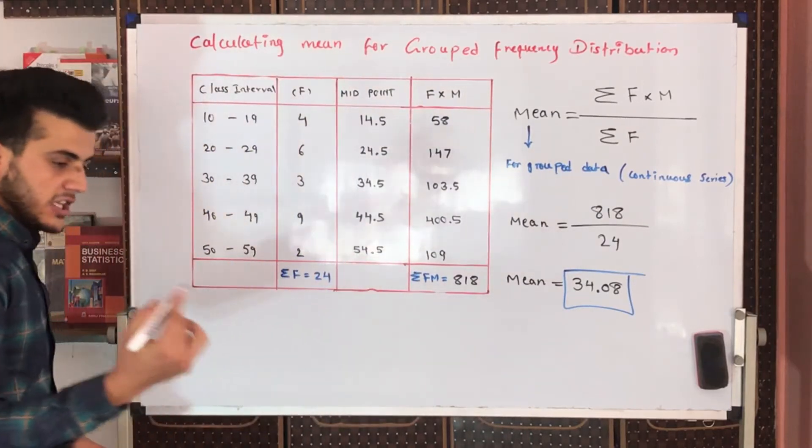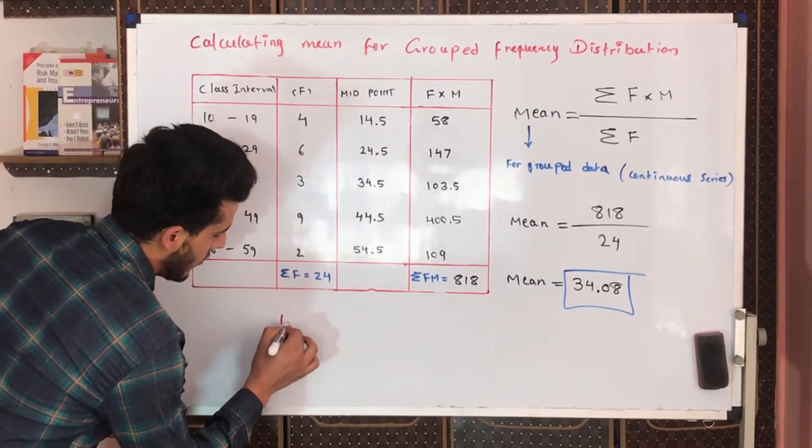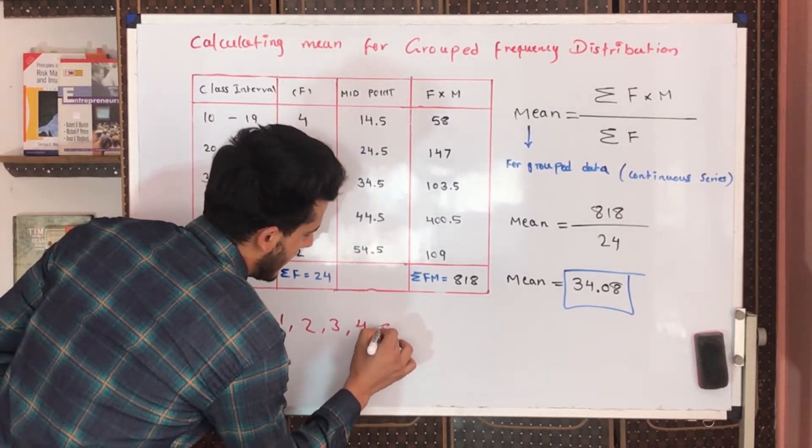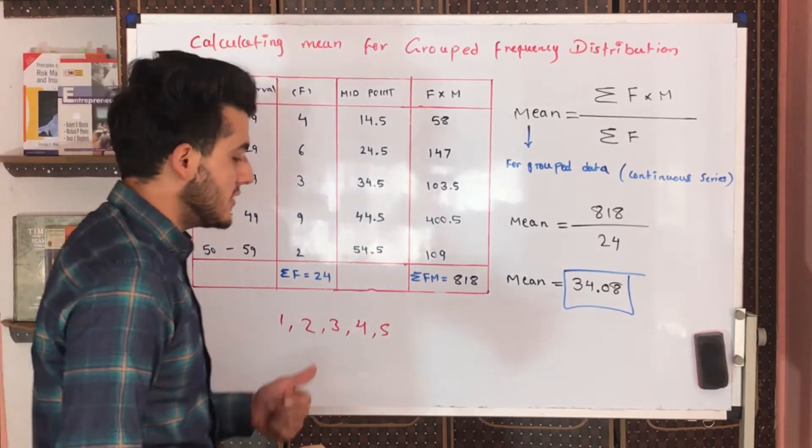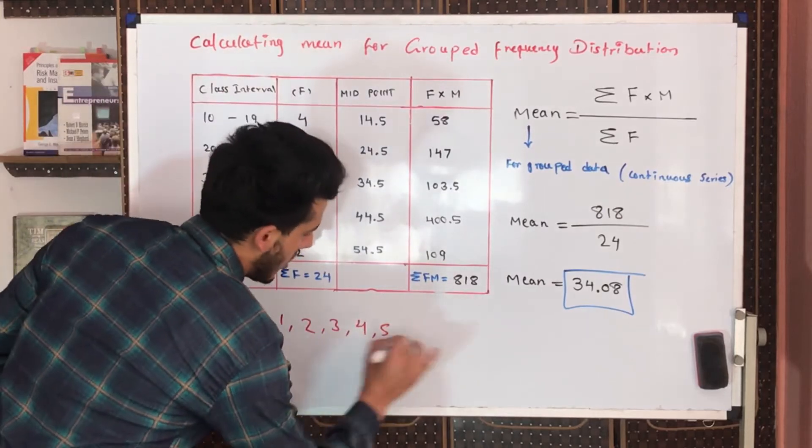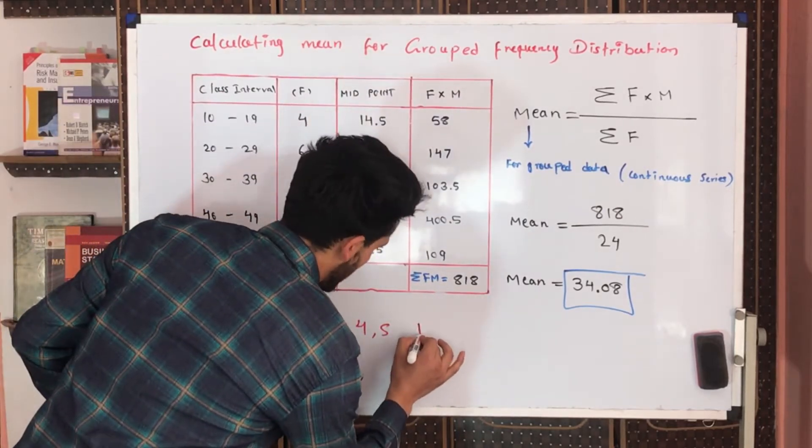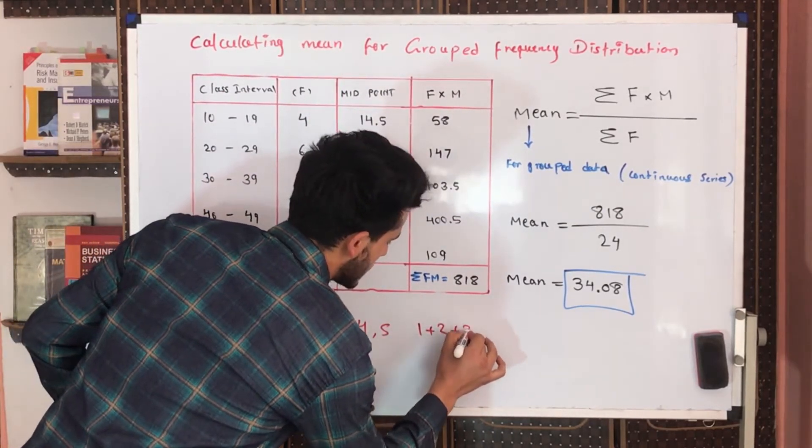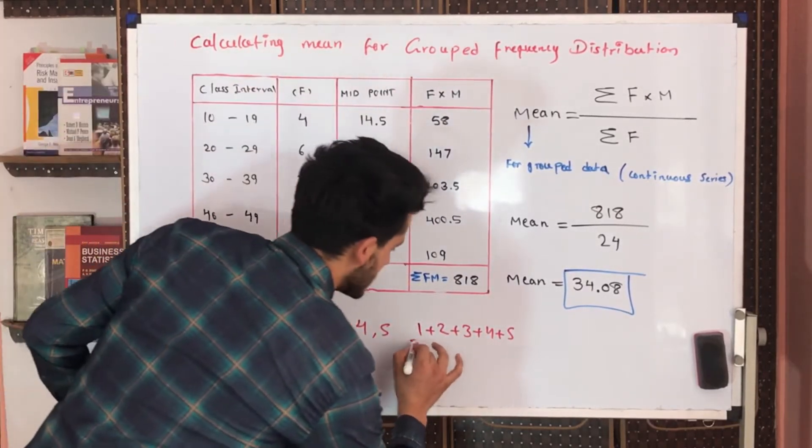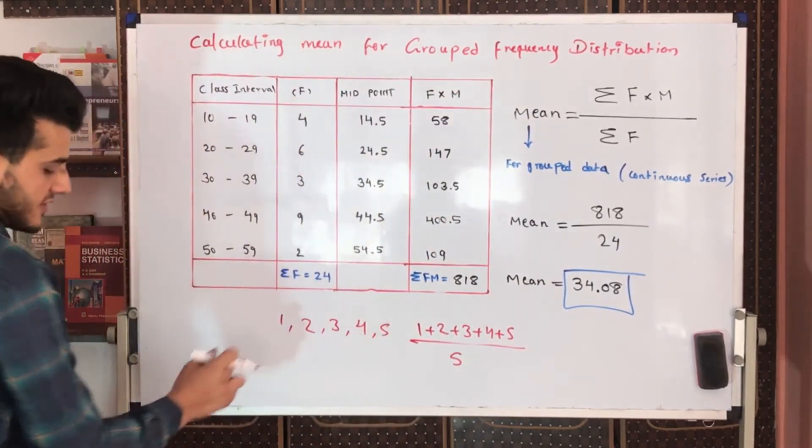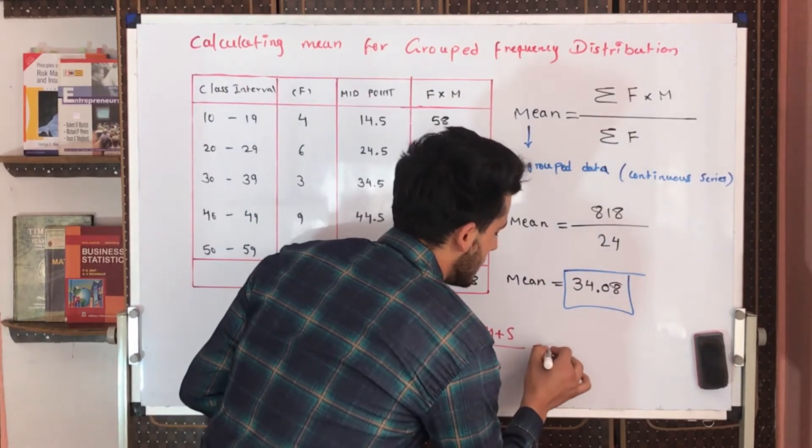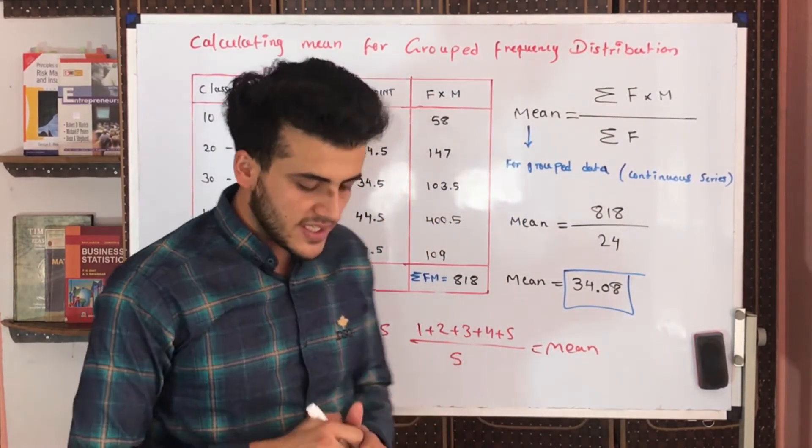For individual series, how did we study? We had simple data: one, two, three, four, five. For calculating these individual series, we were adding all of them - one plus two plus three plus four plus five - and we divide them by five because we have five numbers here. It was very simple and we received the mean.